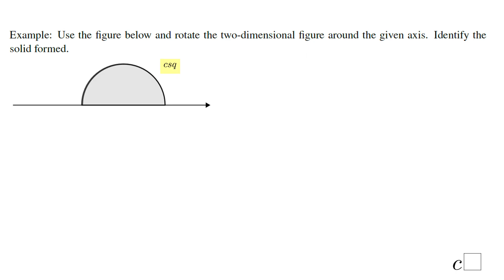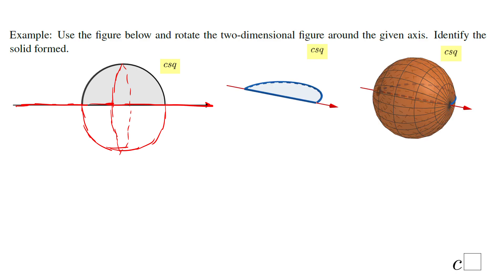In the next example we're going to rotate a half-circle around this horizontal line. I'll reflect it and draw the other half of the circle, giving us something like this — this is a sphere. So when you rotate a half-circle you get a sphere. In fact, if you rotate the whole circle you also get a sphere.